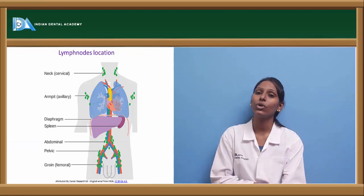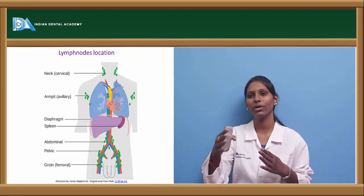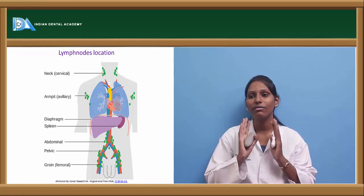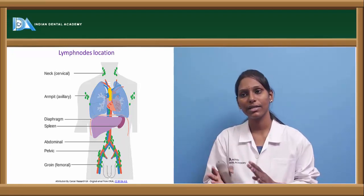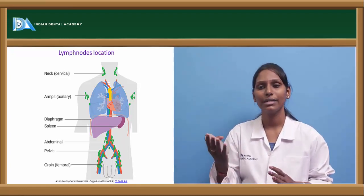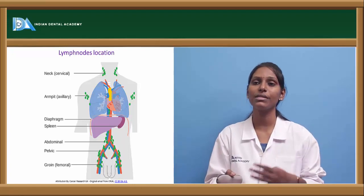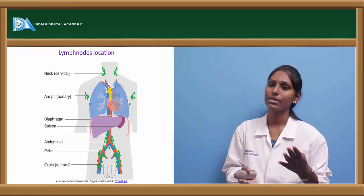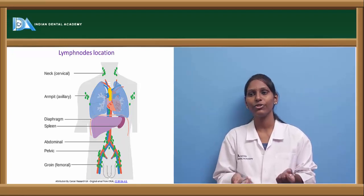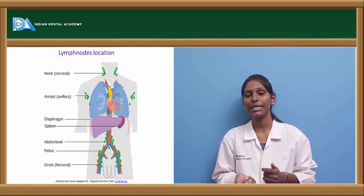Coming to lymph node location: the usual gross lymph node locations are the neck (cervical region), in the armpit (axillary lymph nodes), the diaphragm region, splenic lymph nodes, the abdominal region, the pelvic region, and the groin region — usually called inguinal lymph nodes. These are the gross distributions of lymph nodes that can be seen.